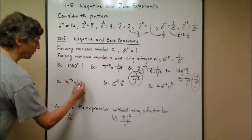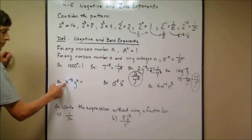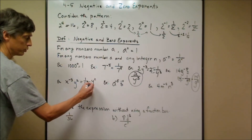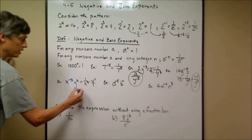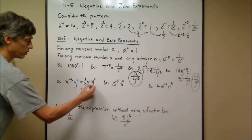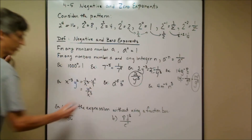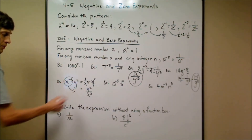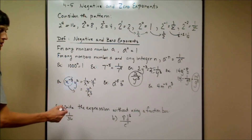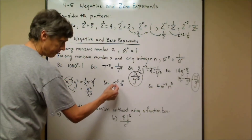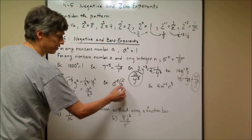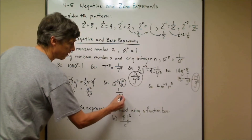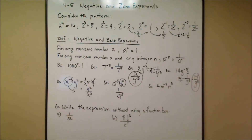Now let's simplify expressions to get rid of negative exponents. x^(−3) becomes 1 over x^3. y^2 over x^(−3) — the y squared stays on top and the x to the negative third moves to the denominator, giving y squared over x cubed. For a^(−5) times b^0, b^0 is just 1, so you have a^(−5) times 1, which equals 1 over a^5.